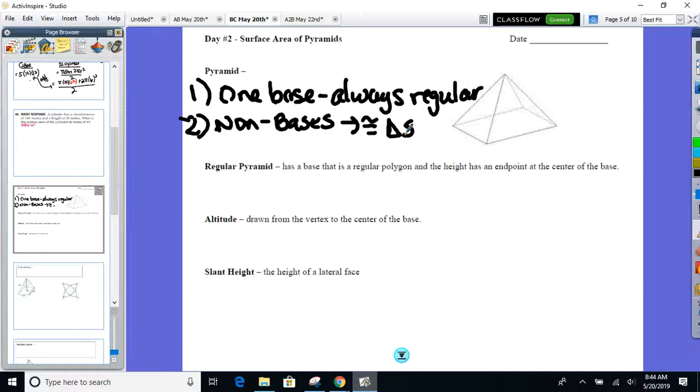Regular pyramid, we're always going to deal with the regular pyramid. Just means the base is regular. Now, here's the huge part about today. There are two heights in a pyramid. Two heights. One's called the altitude. One's called the slant height. Where are they located on the pyramid?